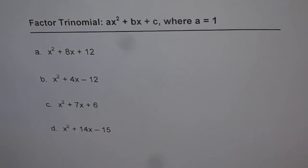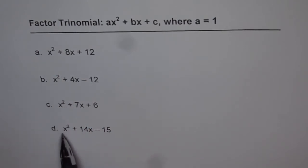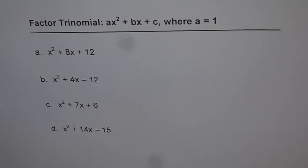Factor trinomials like ax² + bx + c where a equals 1. In these examples we have x² and you see the coefficient of x² is 1 in all cases. So these are special cases. When the coefficient of x² is 1, then for factoring we can adopt the product and sum method.